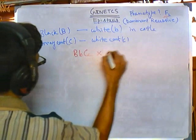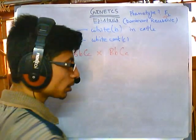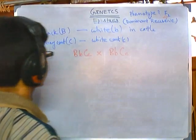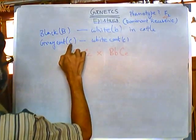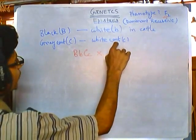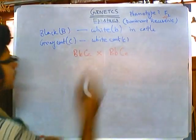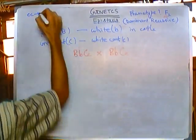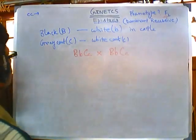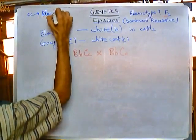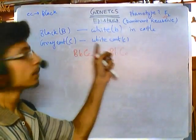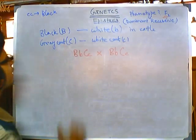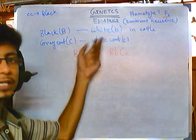We'll be crossing caps B caps B cap C small c with caps B caps B cap C small c. The important concept is that the only way of getting white coat color — whenever two small c's are there, this is giving black. Small c is recessive epistatic, cap C is dominant epistatic. So whenever there are two small c's, it gives us black coat color instead of white, because the gray or cap C is epistatic over it.